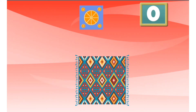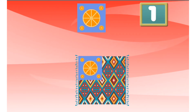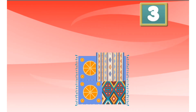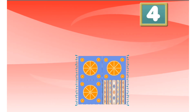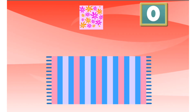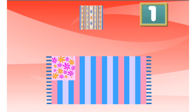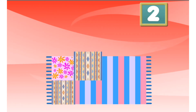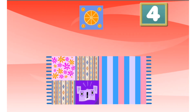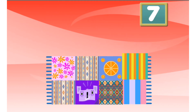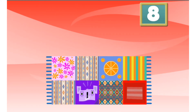Find the area of this shape. Count how many square cloths cover the shape. 1, 2, 3, 4, 5, 6, 7, 8. I was right! The picnic blanket has an area of eight square cloths.